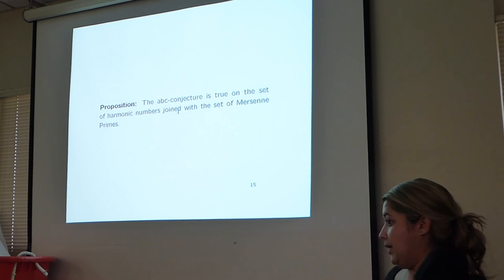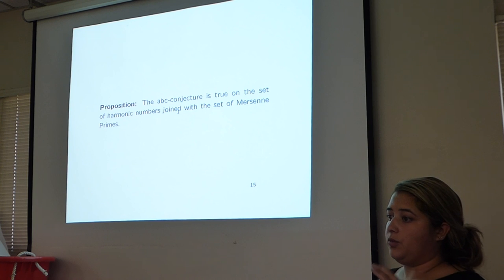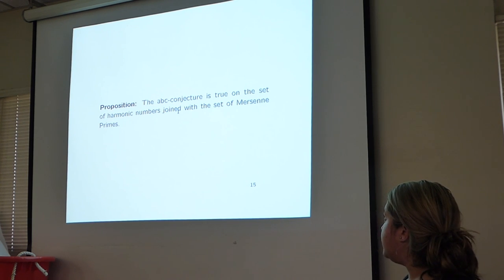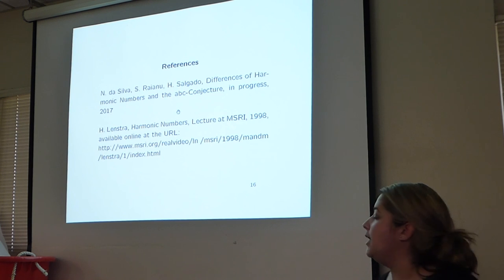We related the ABC conjecture with harmonic numbers. The ABC conjecture is true on a set of harmonic numbers joined with Mersenne primes. And that's it.